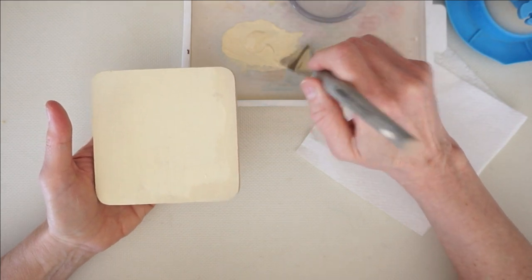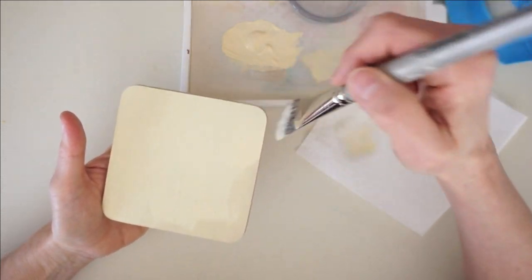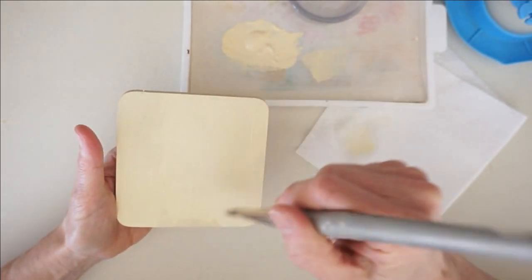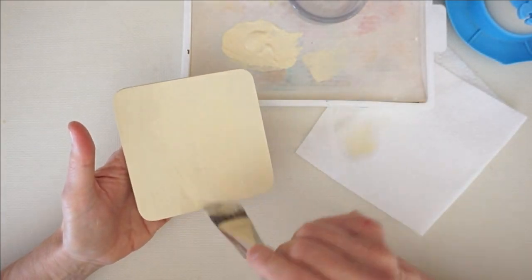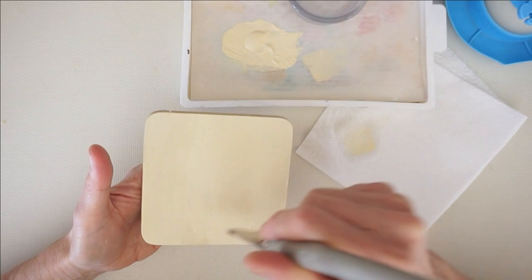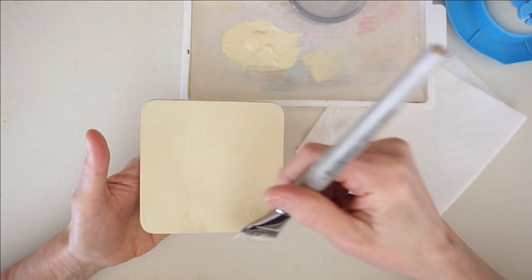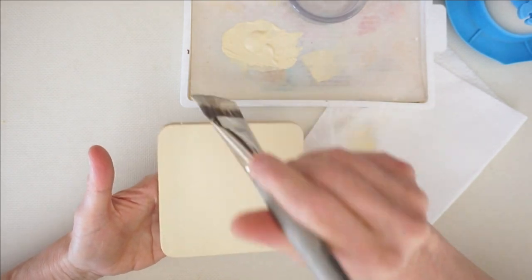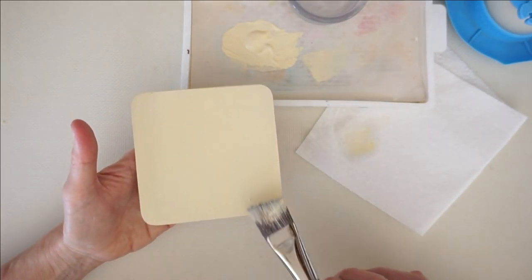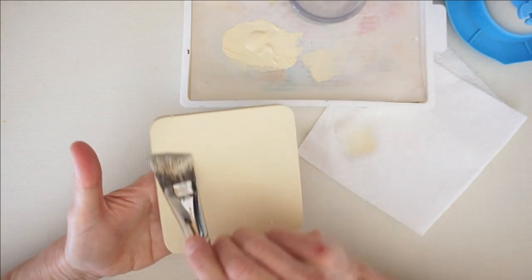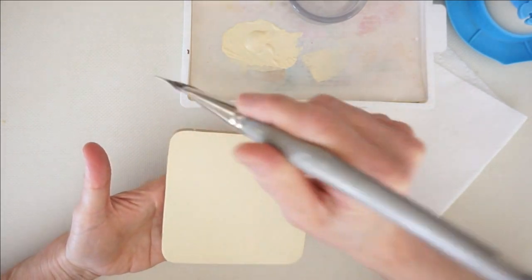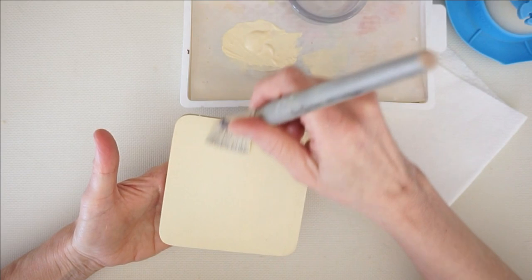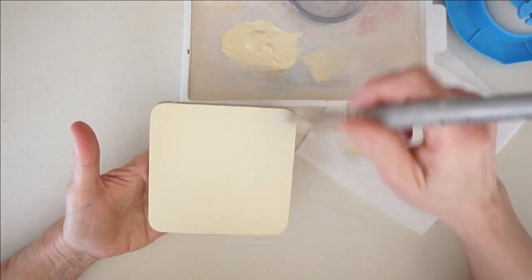Because that first coat is going to absorb into the MDF and form like a barrier. The second coat is going to help that barrier be a little bit thicker so that we can sand off the little bumps and things like that and make our surface smooth. We have to have enough paint on here to sand, if that makes sense.